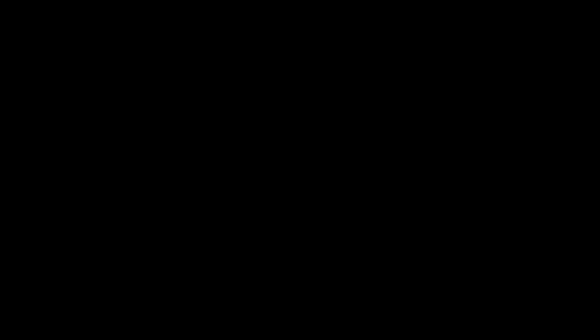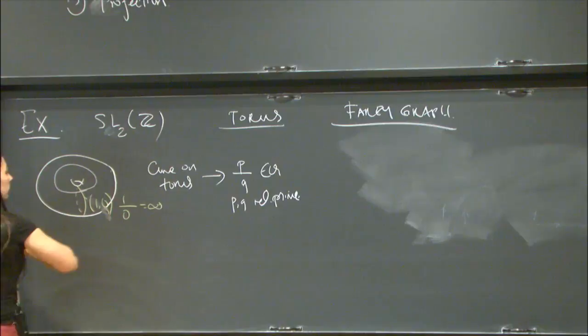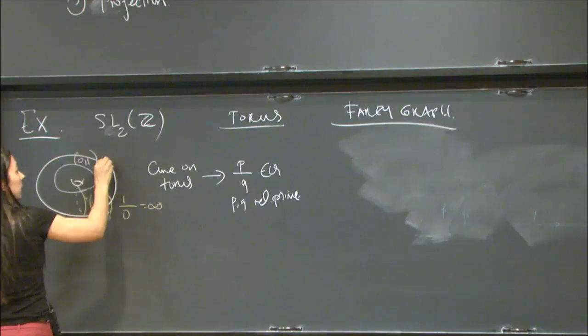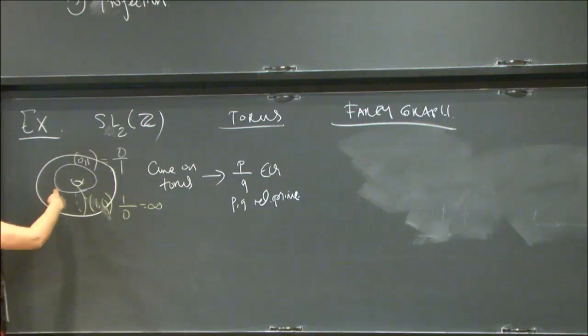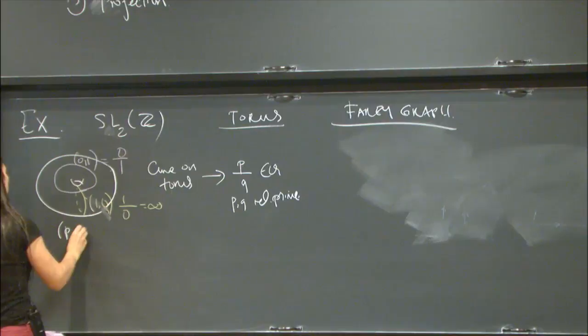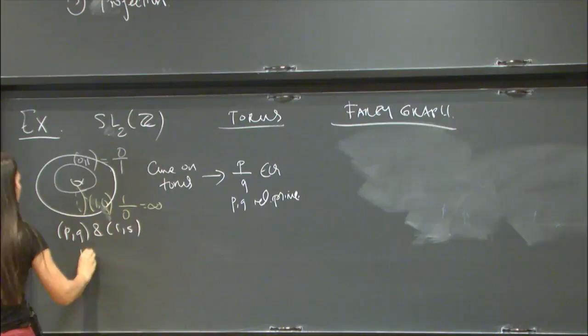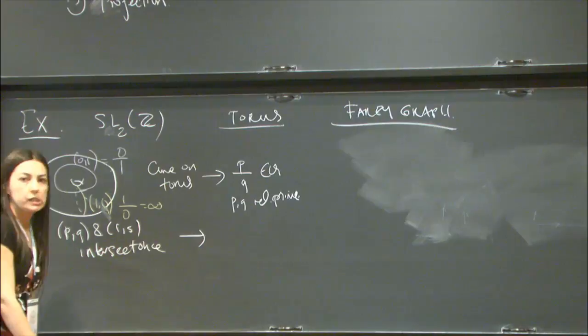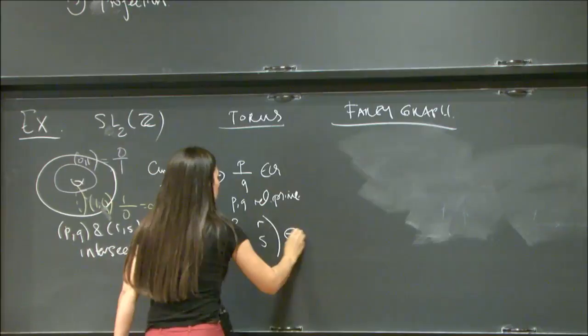This curve here is the longitude curve, which is the (0,1) curve, identified with the number 0. All other (P,Q) curves go P times around one direction and Q times around the other. Moreover, if you take a pair of curves — (P,Q) and (R,S) — which intersect once, you get a matrix in SL(2,Z) by writing them as columns. So that's the connection — this is actually the mapping class group of the torus.